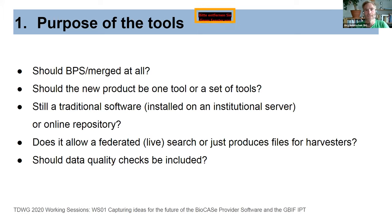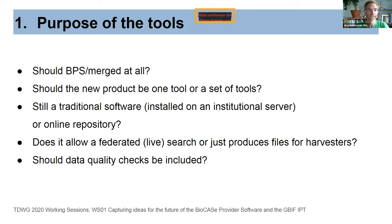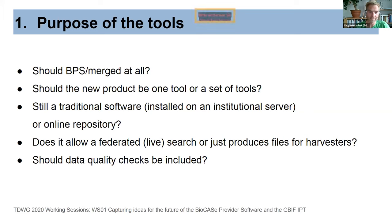There are four categories of considerations for thinking about the future of these tools. The first covers basic considerations: should the tools be merged or kept separate for different communities? If there's one new shared product, should it be just one tool or a set of tools? Should it be traditional software installed on an institutional server or an online repository? Does it still need a federated live search or should it just produce files for harvesters like GBIF? Should data quality checks be included?